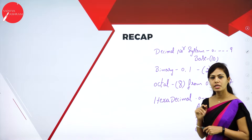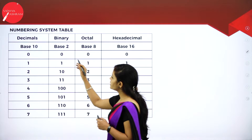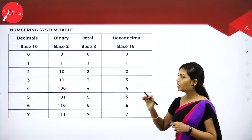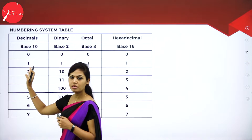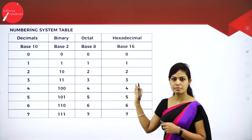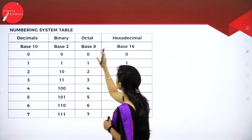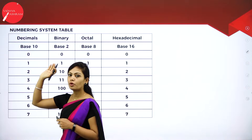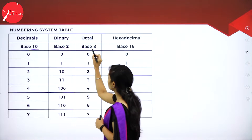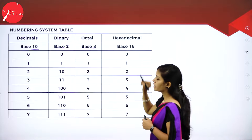Today I am going to explain about the number system table and conversion problems — using decimal, binary, octal, and hexadecimal base values — how to convert from binary to decimal, decimal to binary, binary to octal, and octal to hexadecimal. What is the base value of decimal? It is 10. Base value of binary is 2. Base value of octal is 8. Base value of hexadecimal is 16.